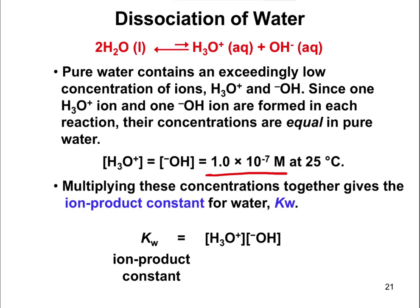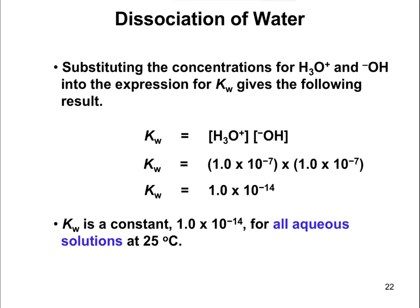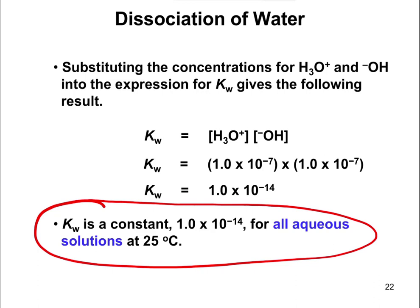The ion product constant of water, Kw, is equal to [H₃O⁺] times [OH⁻], which equals 1×10⁻⁷ times 1×10⁻⁷, giving us 1×10⁻¹⁴. This tells us that for any aqueous solution, the product of [H₃O⁺] and [OH⁻] must equal 1×10⁻¹⁴. In pure water it's 1×10⁻⁷ each, but for other solutions that aren't pure water, Kw still holds true.